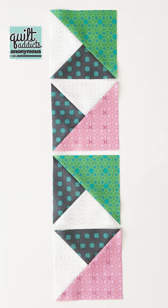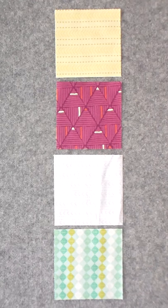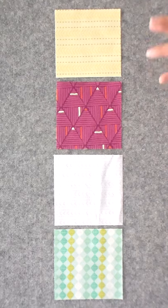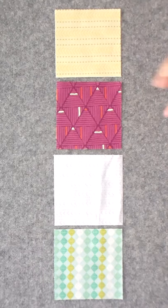Here's how to make double pinwheels from squares. Start with two squares that are one and a quarter inches larger than your finished block and two squares that are one inch larger than your finished block.